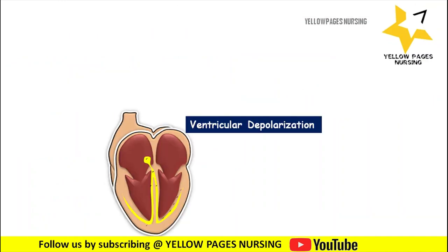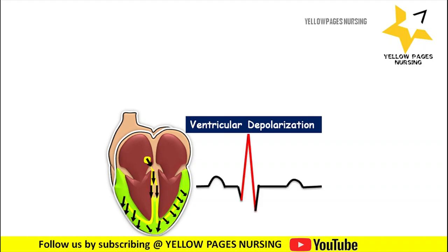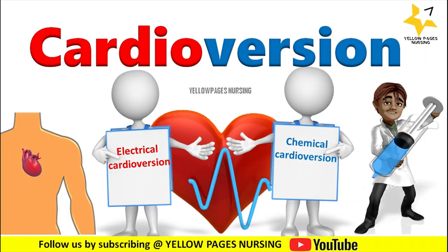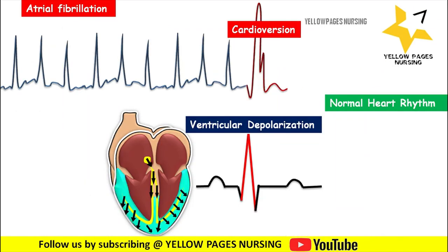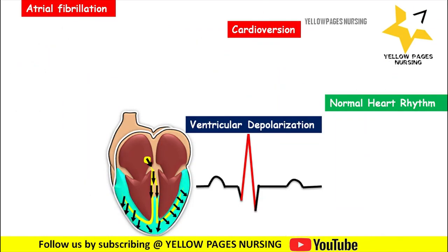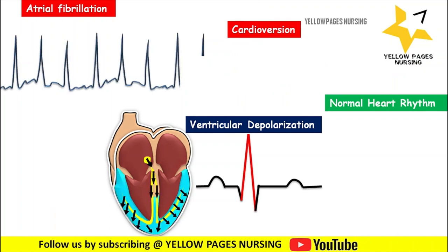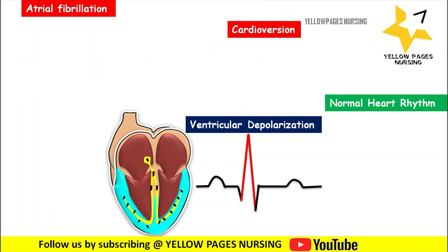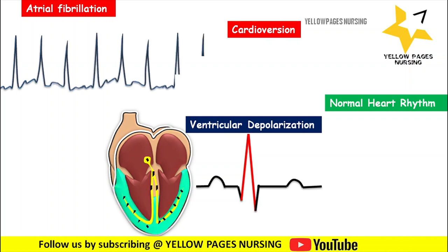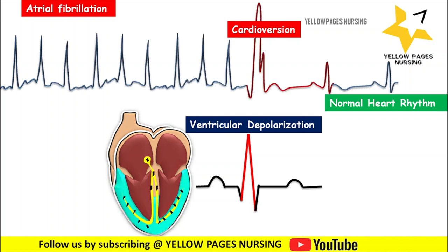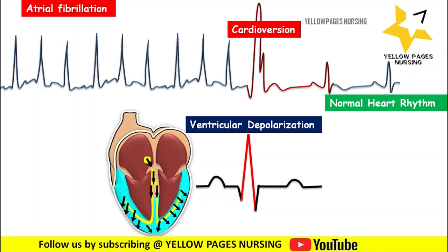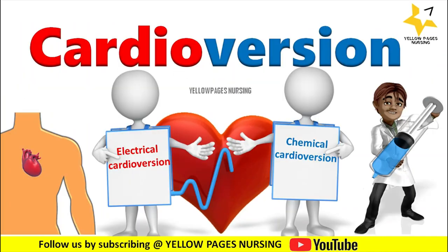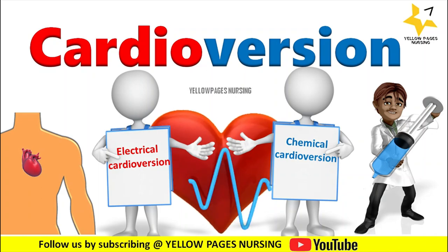The procedure causes immediate depolarization, interrupting re-entry circuits — that is, the abnormal impulse conduction that occurs when cardiac tissue is activated two or more times, causing re-entry arrhythmias — and allowing the sinoatrial node to resume control. The graph shown clearly demonstrates atrial fibrillation where cardioversion is applied, achieving a normal heart rhythm. If you found this video useful, please like, share, and subscribe, and don't forget to hit the bell icon. Thanks for watching, have a nice day.